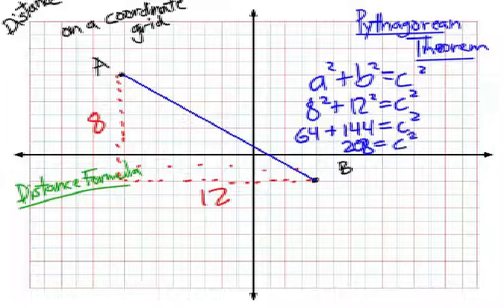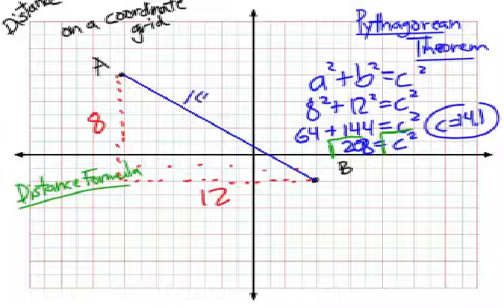And then I take the square root of each side, and I get the square root of 208. And the distance C would be about 14.1. So, the length of our segment is about 14.1 units. Alright, using Pythagorean Theorem.